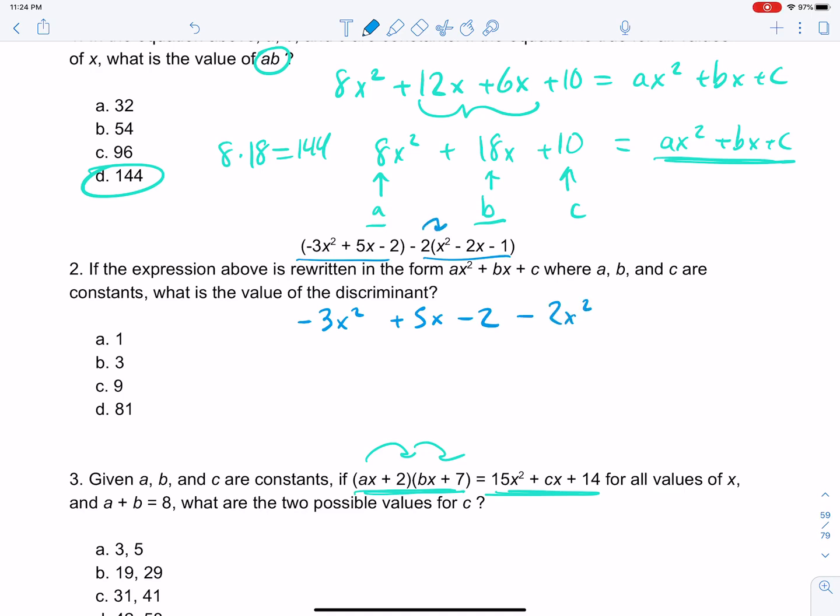Minus 2x² plus 4x. Remember, you're multiplying by negative 2. And the negative 2 times negative 1 is positive 2. Now let's combine like terms, and let's be very careful as we do that. So negative 3x² and negative 2x² is negative 5x². Positive 5x and positive 4x is 9x. Negative 2 and 2 is 0. So there's nothing there.